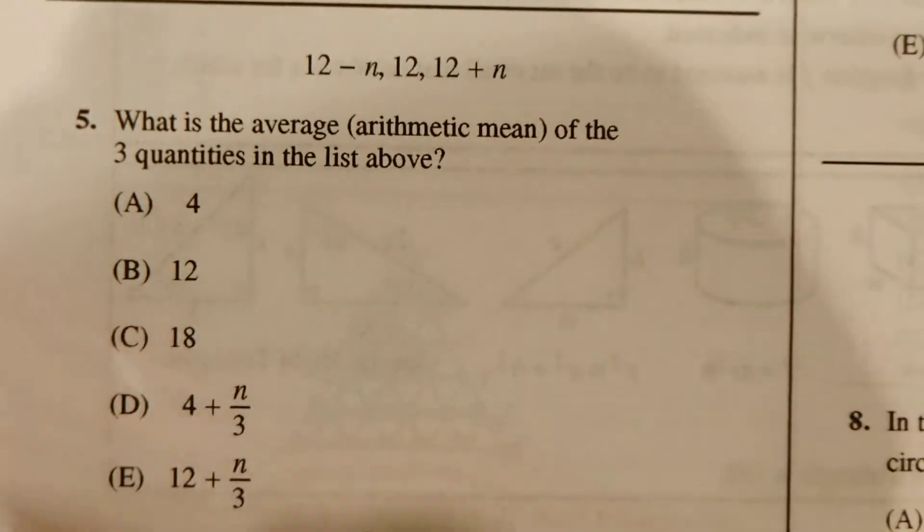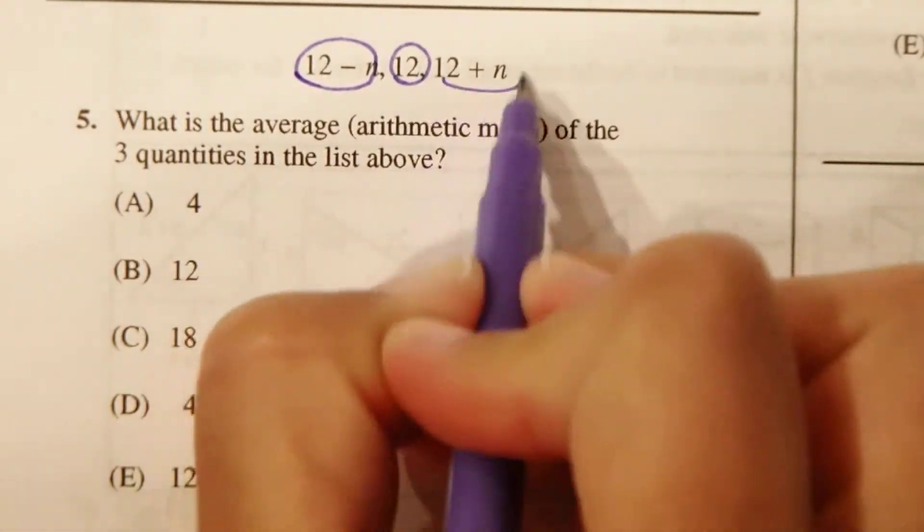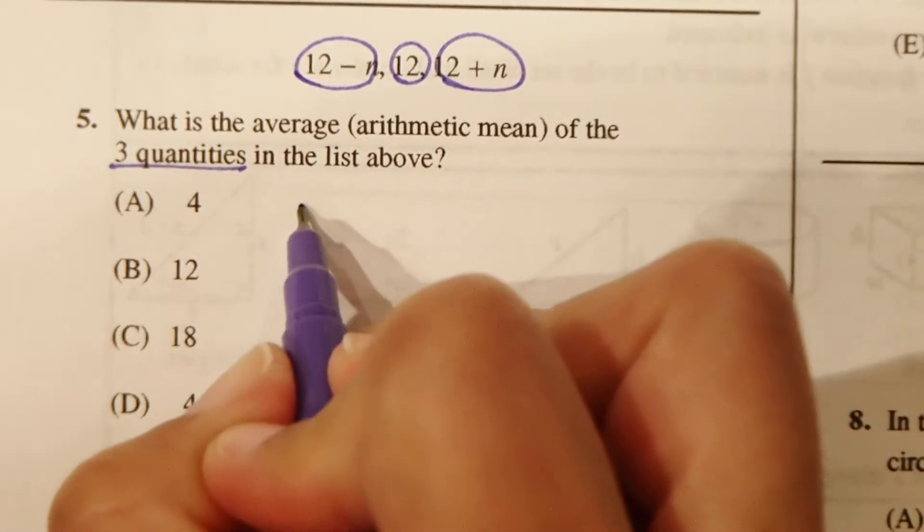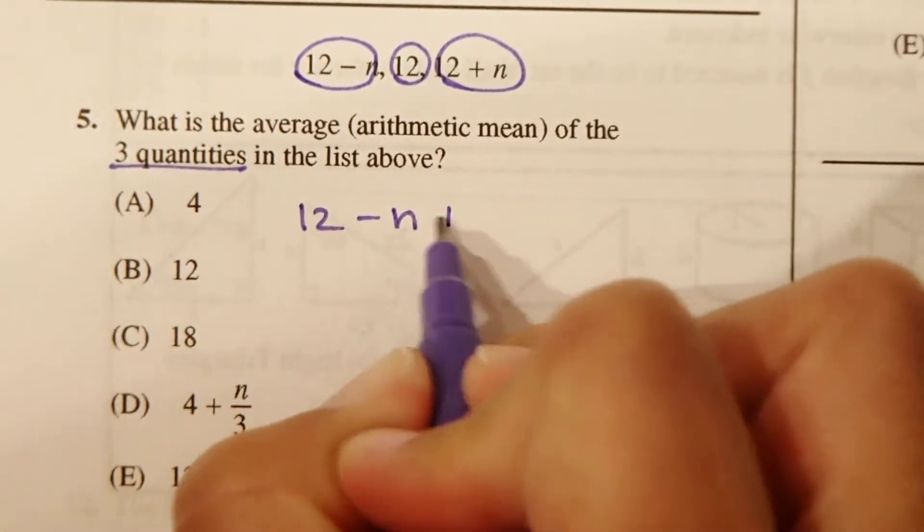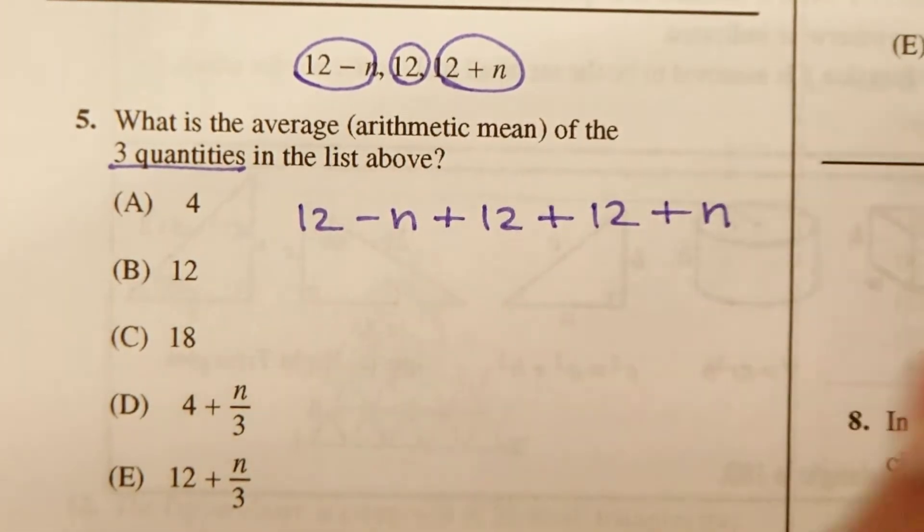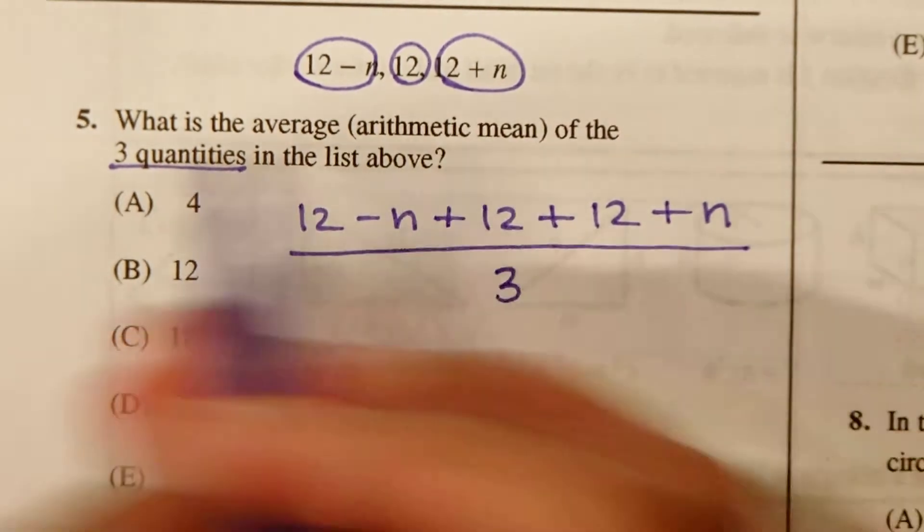So in this case here, here's one term, here's another, and here's the third. This is the three quantities. So we've got 12 minus n plus 12 plus 12 plus n. And this all needs to be divided by how many terms there were, 3.